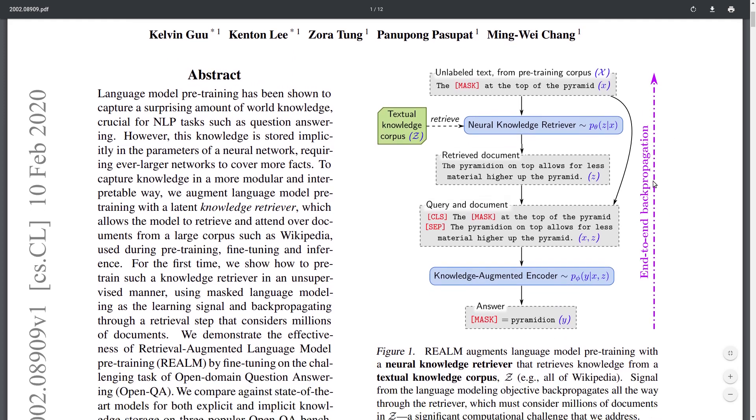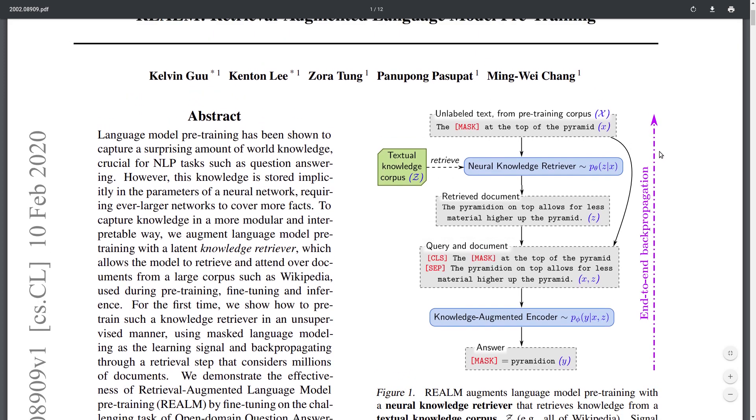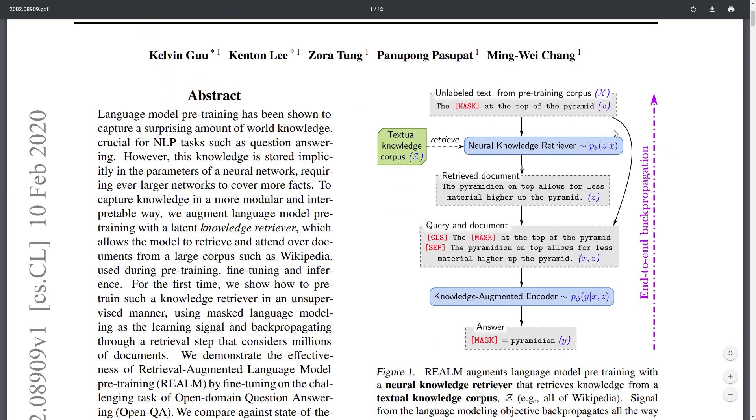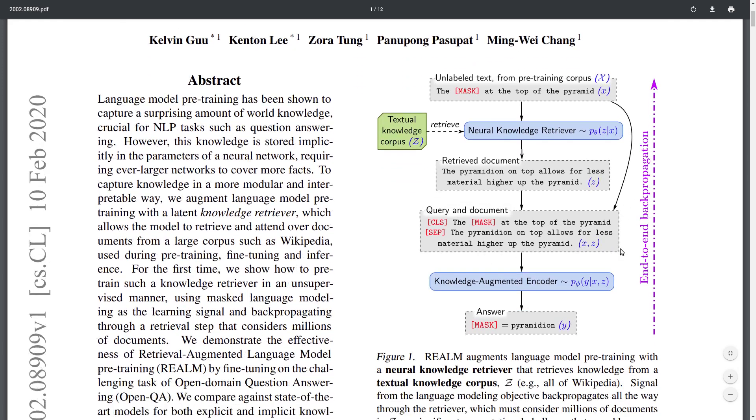This is precisely what the authors do. They propose this REALM model, which combines a retrieval model that finds relevant documents from a database z here. It takes the most relevant document, prepares it, and uses it for this extra knowledge-augmented prediction step.